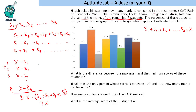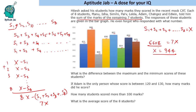Let's add all the bar graph values: 67 + 70 + 100 + 137 + 151 + 183 + 208, giving a total of 6608. Since this equals 7X, we divide 6608 by 7 to get X = 944. So the total sum of all eight students' scores is 944.